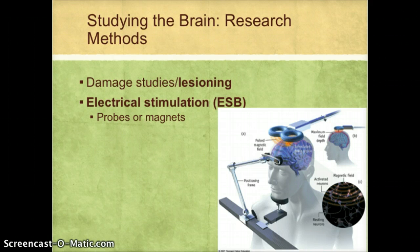Nowadays, we can actually do electrical stimulation without drilling into a person's skull, using magnets. A magnet can stimulate part of the brain, though this stimulation is primarily restricted to the outer layer of the brain. So electrical stimulation is one way we've learned more about the brain.